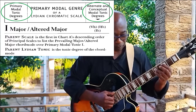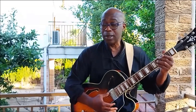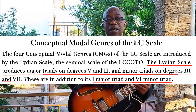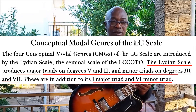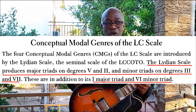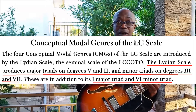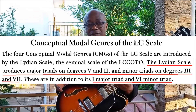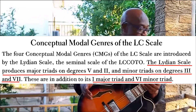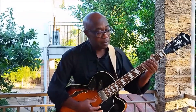The first conceptual model tonic is found on the fifth degree of the Lydian scale, the second is found on the second degree, the third is found on the third degree, and the fourth is found on the seventh degree of the Lydian scale.